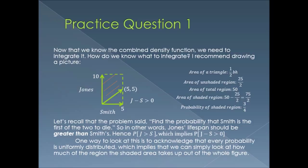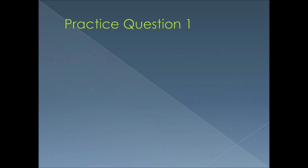We're looking at the shaded area out of the total figure, so it's (75/2) out of 50, which is about 37.5 out of 50. When you simplify that, you get 3/4. That's the probability of the shaded region and the answer to the problem.